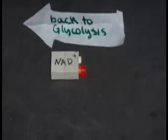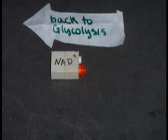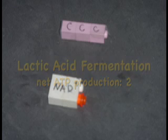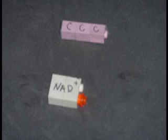The NAD positive cycles back to glycolysis, which continues to provide a small amount of ATP until more oxygen becomes available. This is known as lactic acid fermentation. Lactic acid fermentation only has a net ATP production of two. Another example of fermentation is when yeast and bacteria ferment pyruvate to ethanol and vinegar.